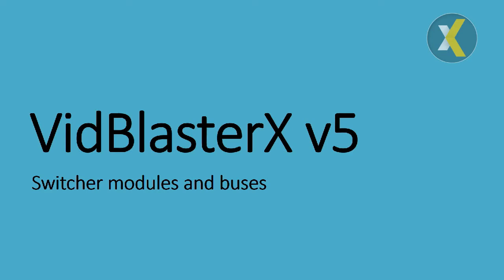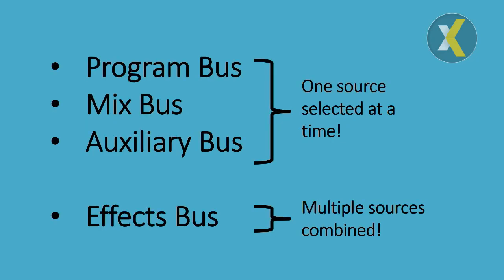Welcome to this short tutorial on VidBlaster X version 5 switcher modules and buses. There are four different types of buses available in VidBlaster X version 5: the program, the mix and the auxiliary bus, and the effects bus.